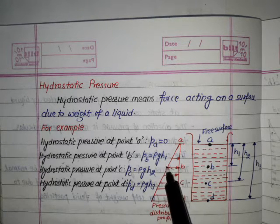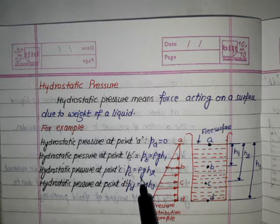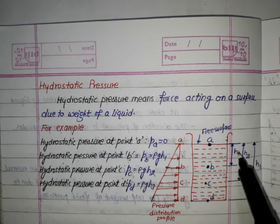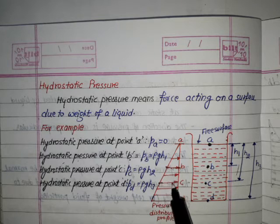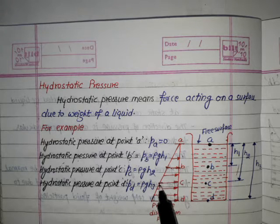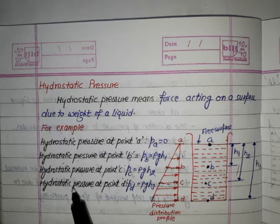Hydrostatic pressure at point C: Pc = ρgh, where h is h2. This is the pressure profile at C.